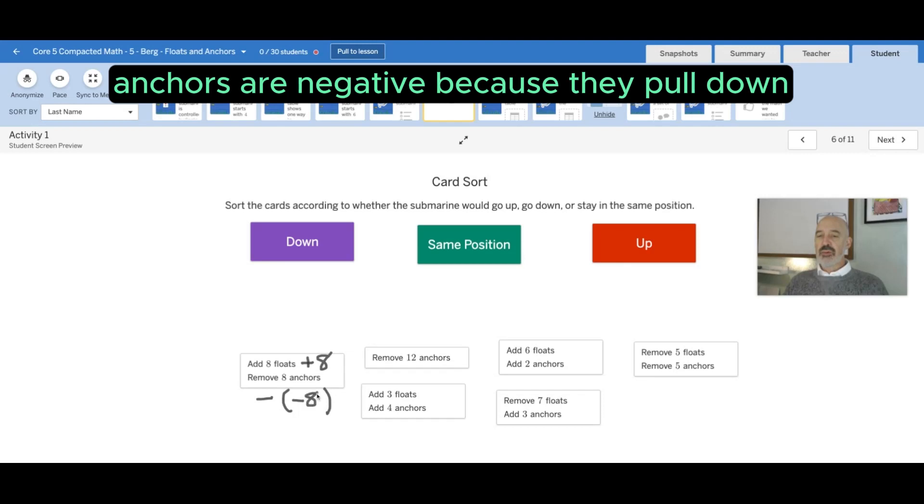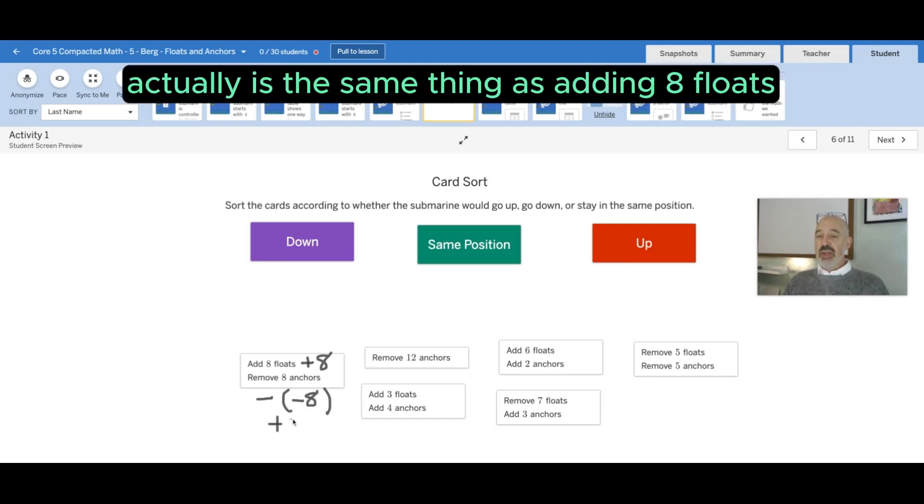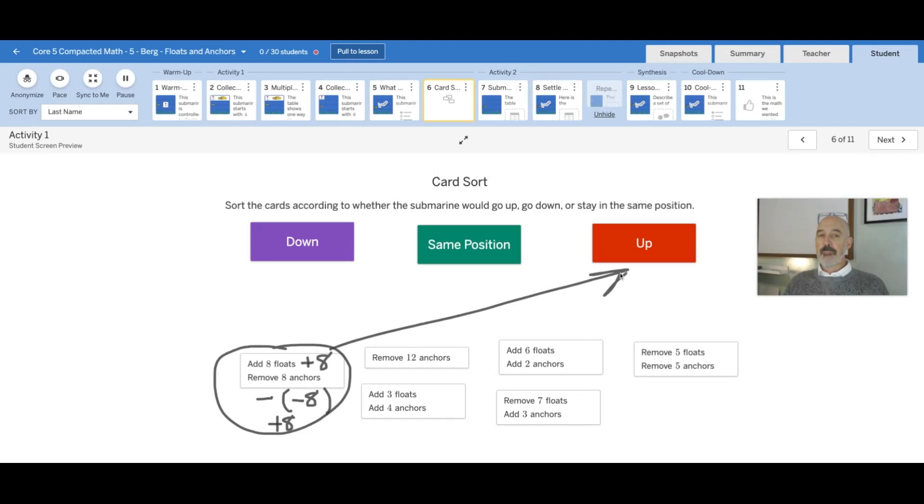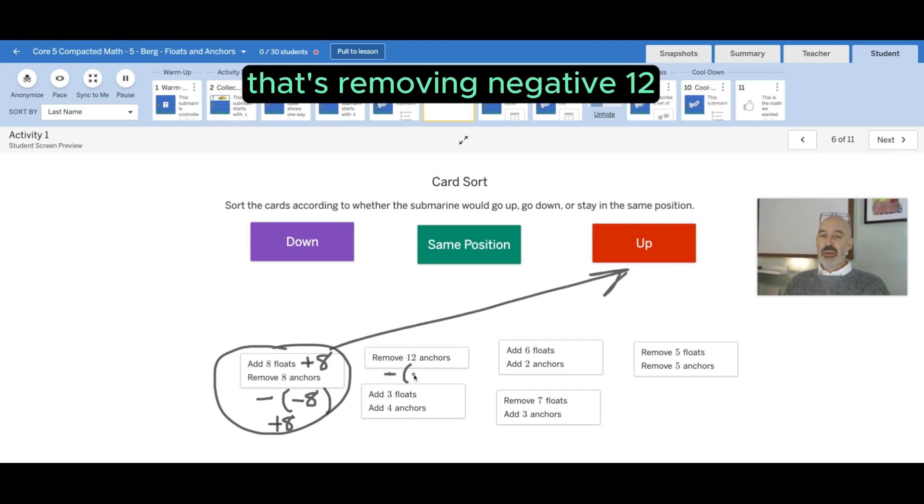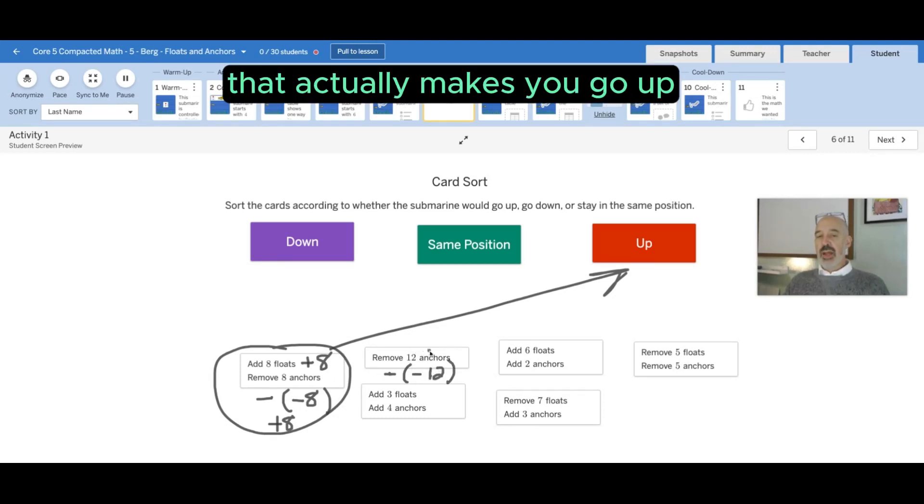So this card goes with up. Now removing twelve anchors, that's removing negative twelve. Same as before, that actually makes it go up. You're taking off a lot of weight.